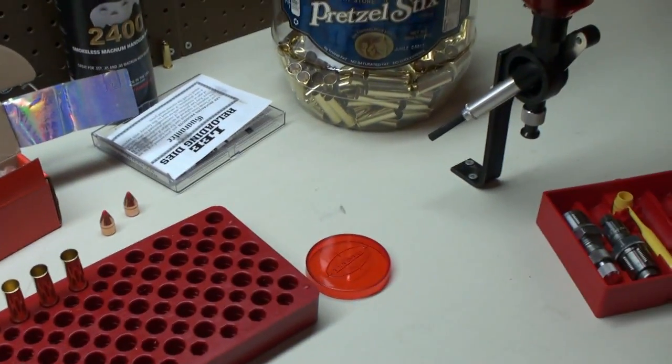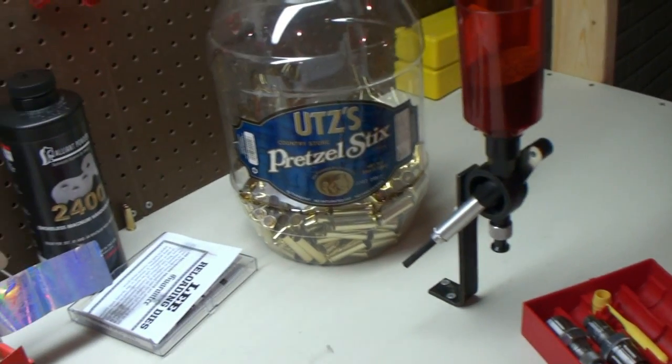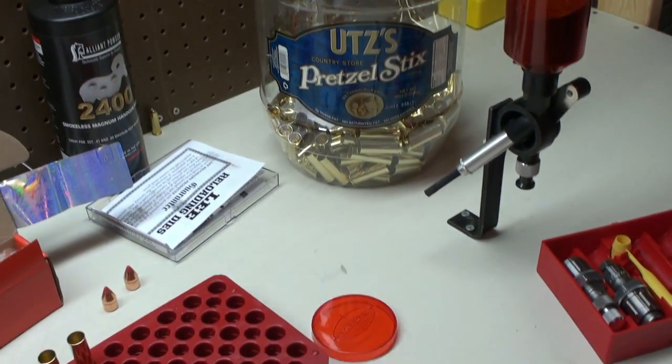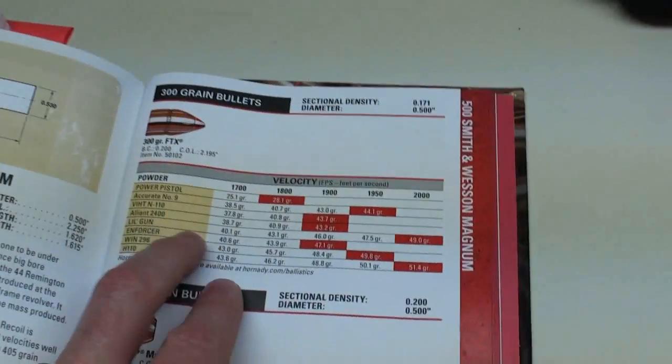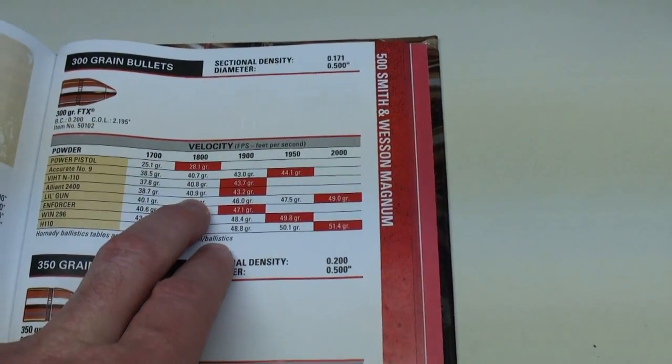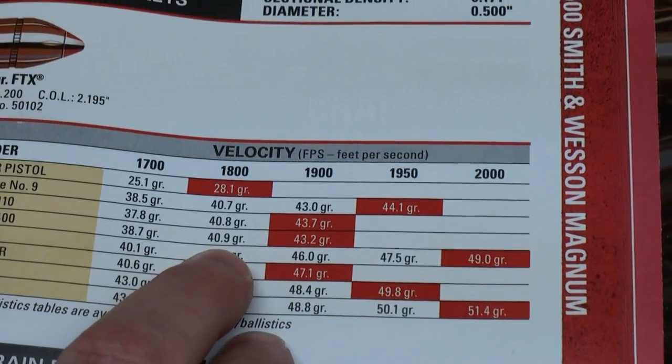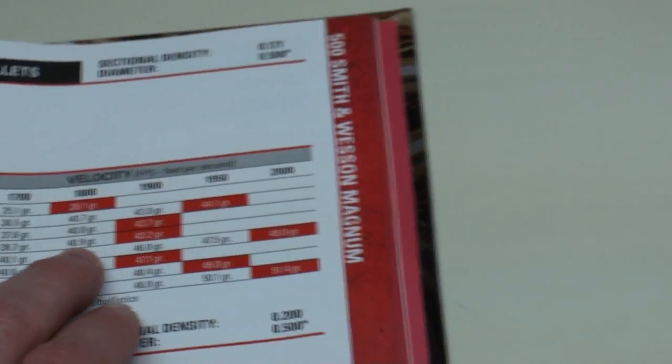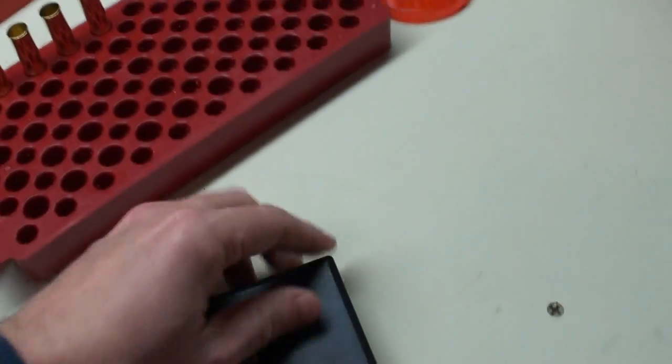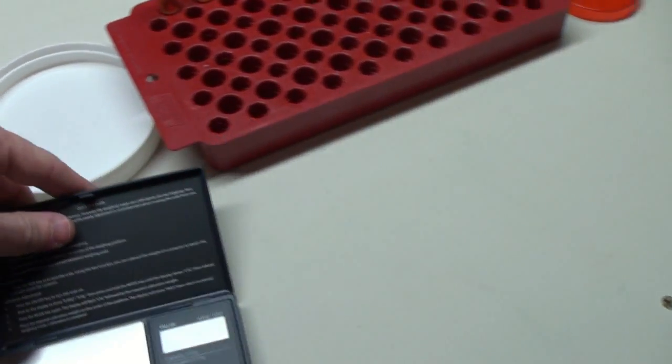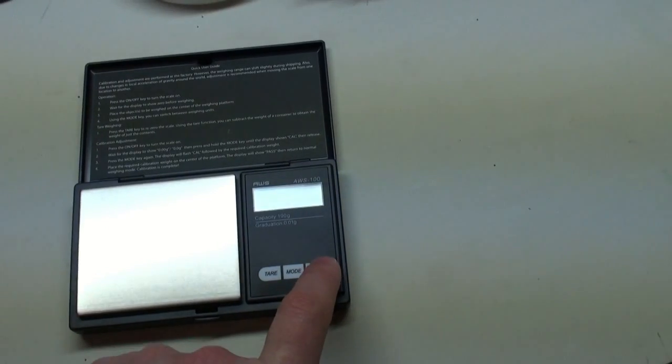The next step is to measure the grains to make sure we get the correct recommended amount. I think last time I did these, I was right around 41 grains. So I'm going to stick with that for this demonstration so I don't have to recalibrate my powder thrower. I have my handy dandy little digital scale. Turn that on.